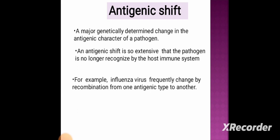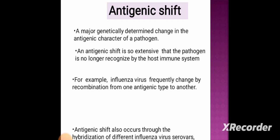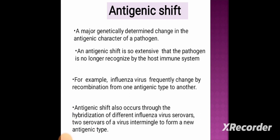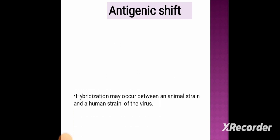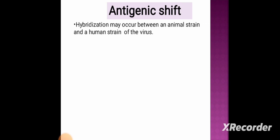Influenza viruses frequently change by recombination from one antigenic type to another. Antigenic shift also occurs through the hybridization of different influenza virus strains. Two strains of a virus intermingle to form a new antigenic type. Hybridization may occur between an animal strain and a human strain of the virus.